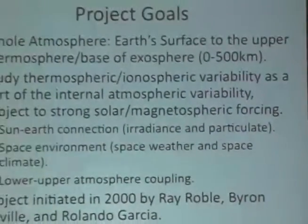For the whole atmosphere model, the whole atmosphere refers to the atmosphere region from the Earth's surface to the upper thermosphere, roughly zero to 500 kilometers. One of the important goals relevant for this community for development of this model is to study the thermosphere and ionosphere variability as part of the internal atmosphere variability, which is also subject to strong solar and magnetosphere forcing.